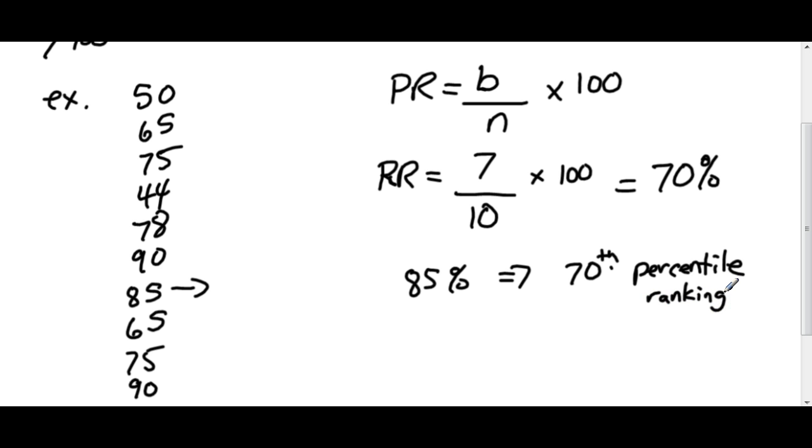So it's a very simple concept to understand. B stands for the number of pieces of data that is below the one that you're testing, N is the total number of the pieces of data. It's a percentile ranking, so we multiply it by 100, and then we know what the ranking was.